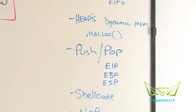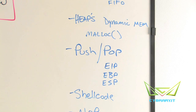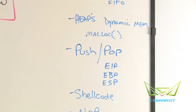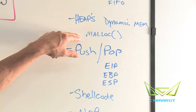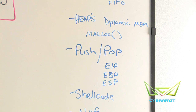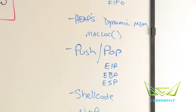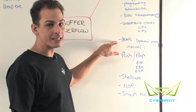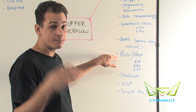Heaps represent your dynamic memory. We can use memory allocation — or as I sometimes call it, malicious location if it's done wrong — but it's really about how things dynamically get stored in RAM. For example, if an application takes some input or data in a field and needs to temporarily store it in memory, it's going to use the heap portion to dynamically allocate that.